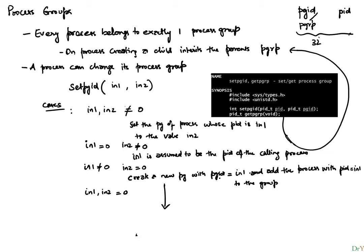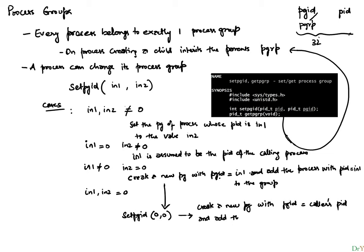The last case is if both input one and input two are equal to zero. Then we create a new process group and it has one member — the caller. This is actually the most common usage: calling setpgid(0, 0). What we're doing is creating a new process group with PGID equal to the caller's PID and adding the caller to this group.